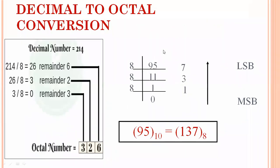To convert a decimal number to octal, we divide by 8 instead of 2. For example, converting 95 to octal: 95 ÷ 8 gives remainder 7, 11 ÷ 8 gives remainder 3, and 1 ÷ 8 gives remainder 1. Reading remainders from bottom to top, 95 in decimal equals 137 in octal.